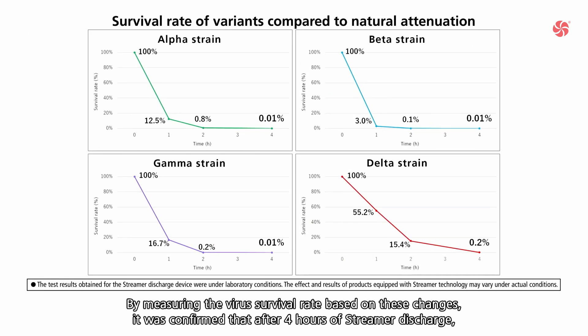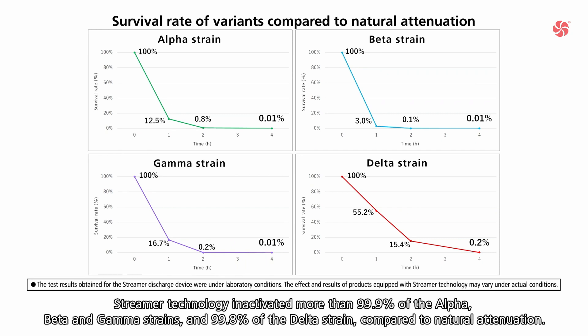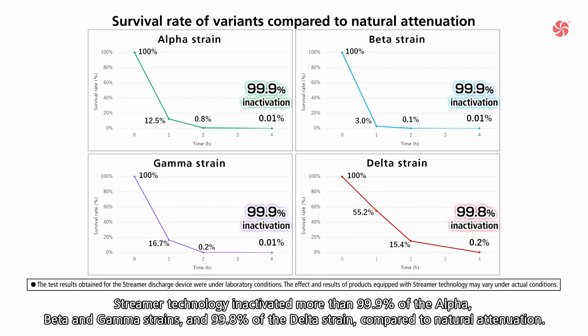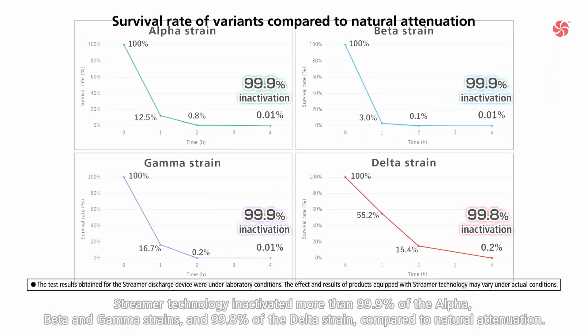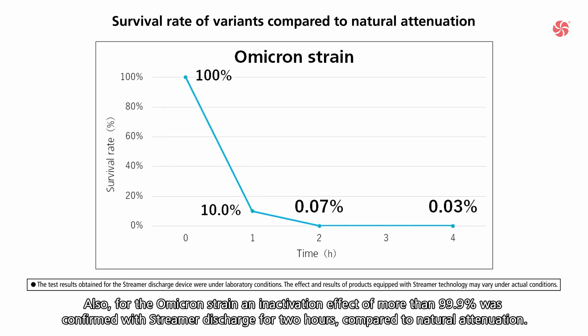By measuring the virus survival rate based on these color changes, it was confirmed that after four hours of streamer discharge, Streamer technology inactivated more than 99.9 percent of the Alpha, Beta, and Gamma strains, and 99.8 percent of the Delta strain, compared to natural attenuation. For the Omicron strain, an inactivation effect of more than 99.9 percent was confirmed with streamer discharge for two hours, compared to natural attenuation.